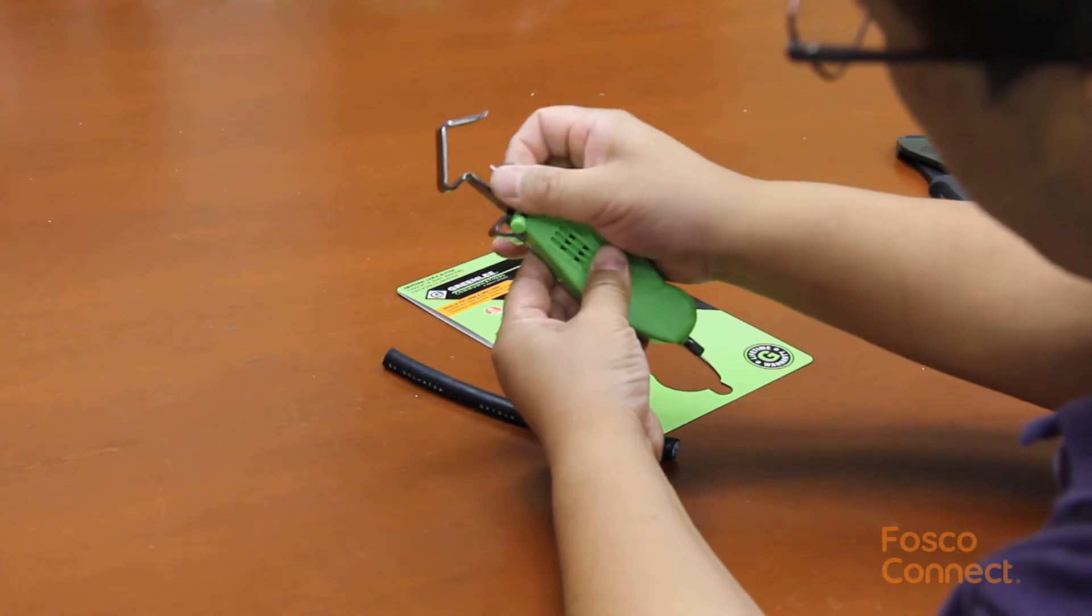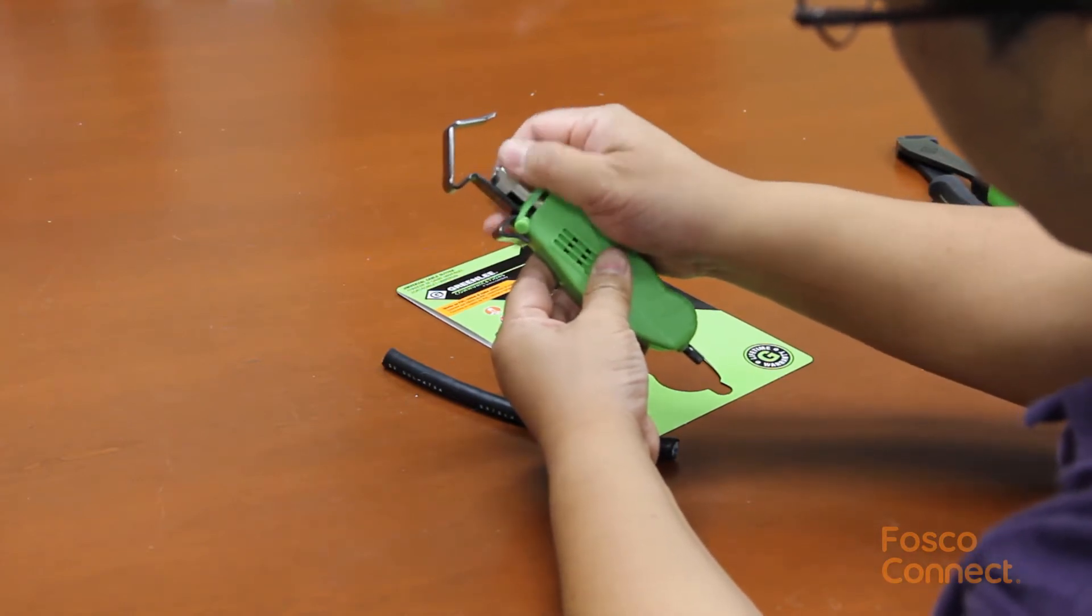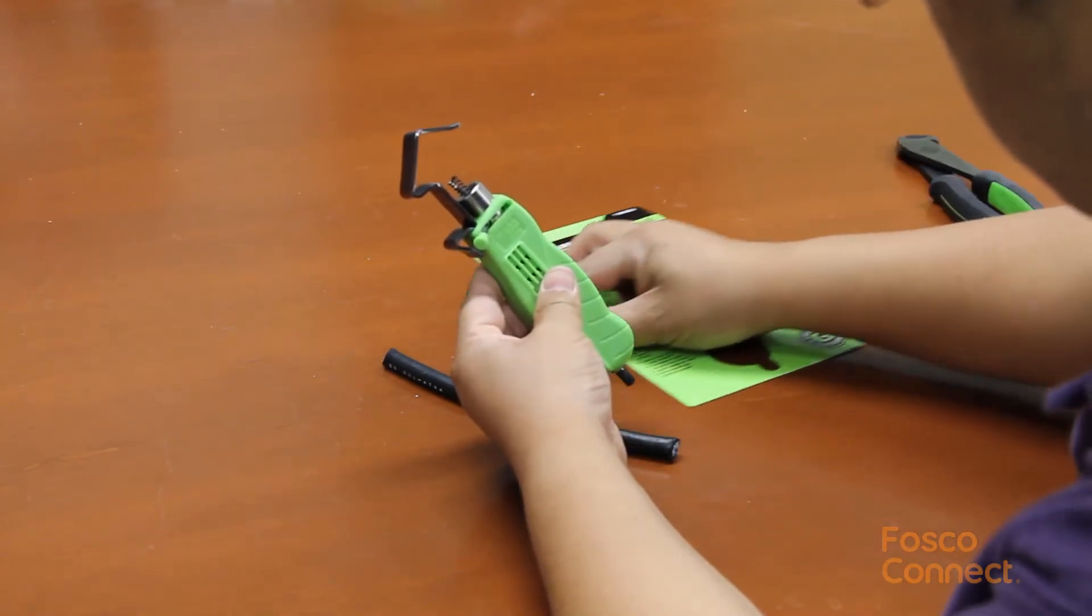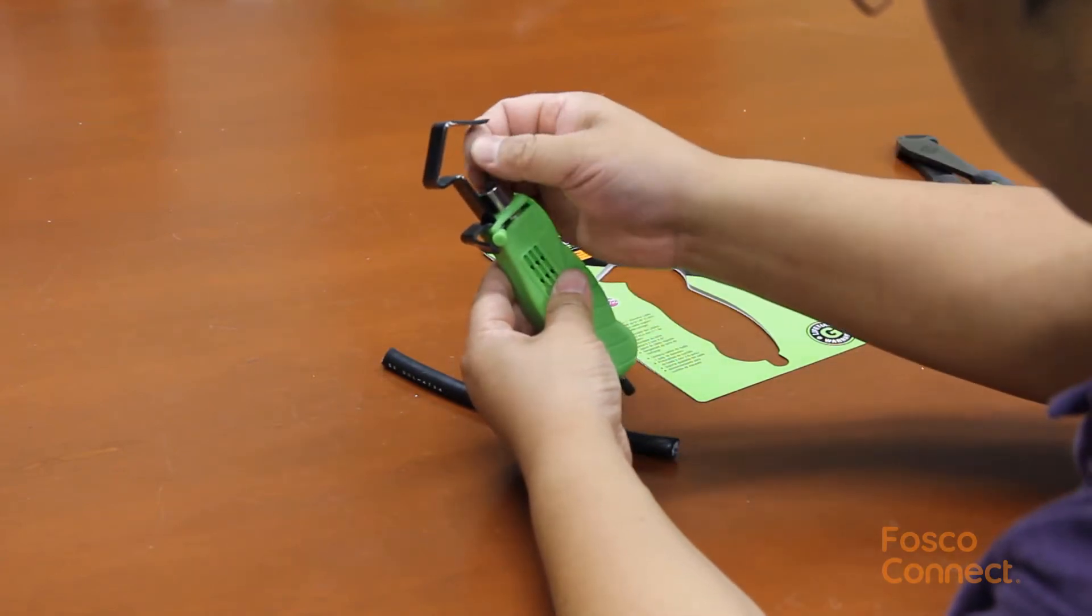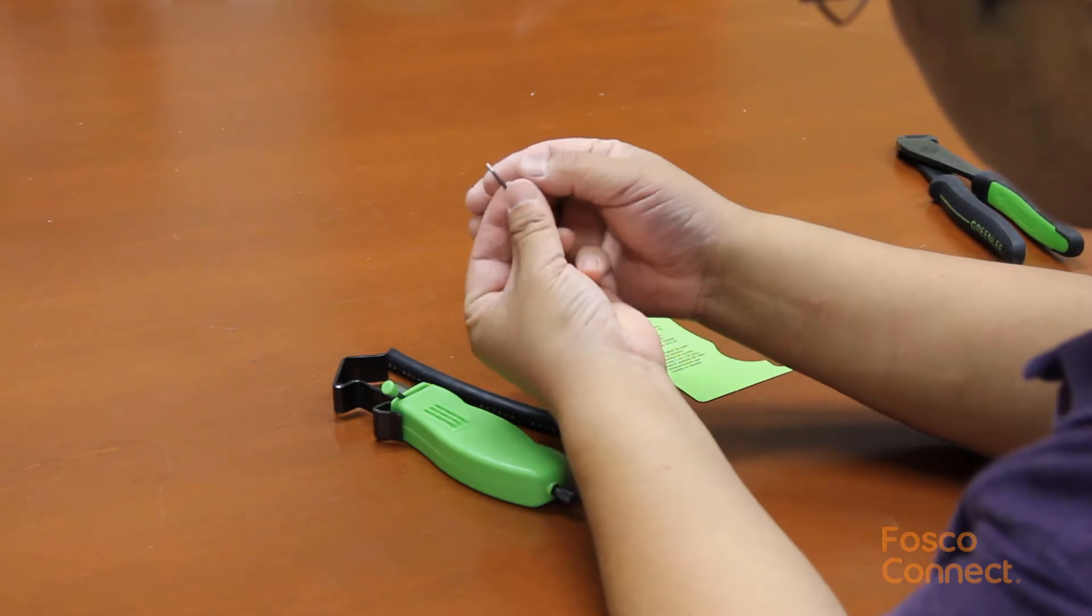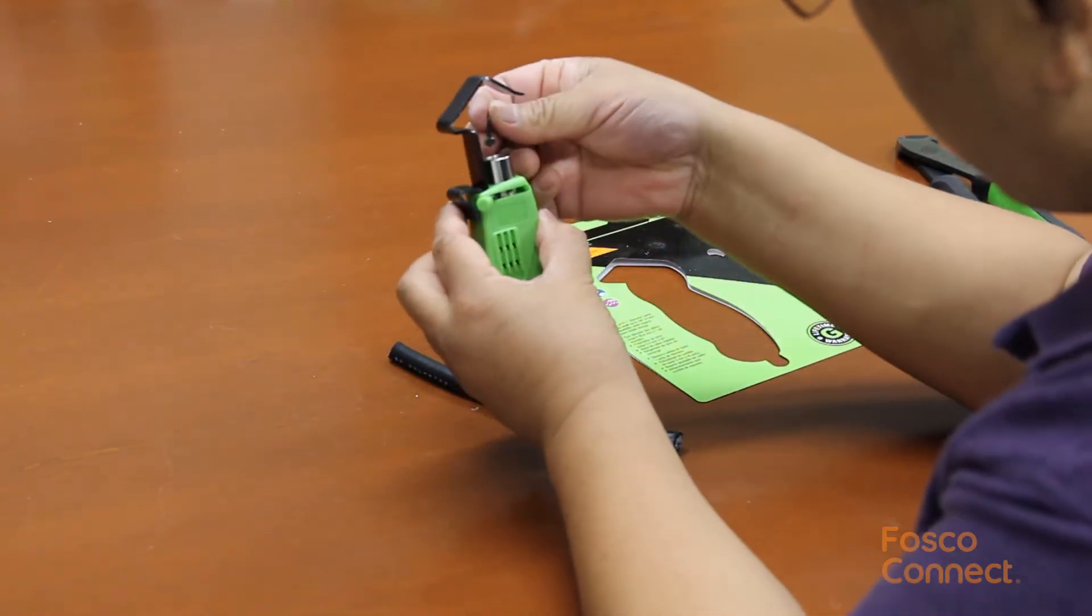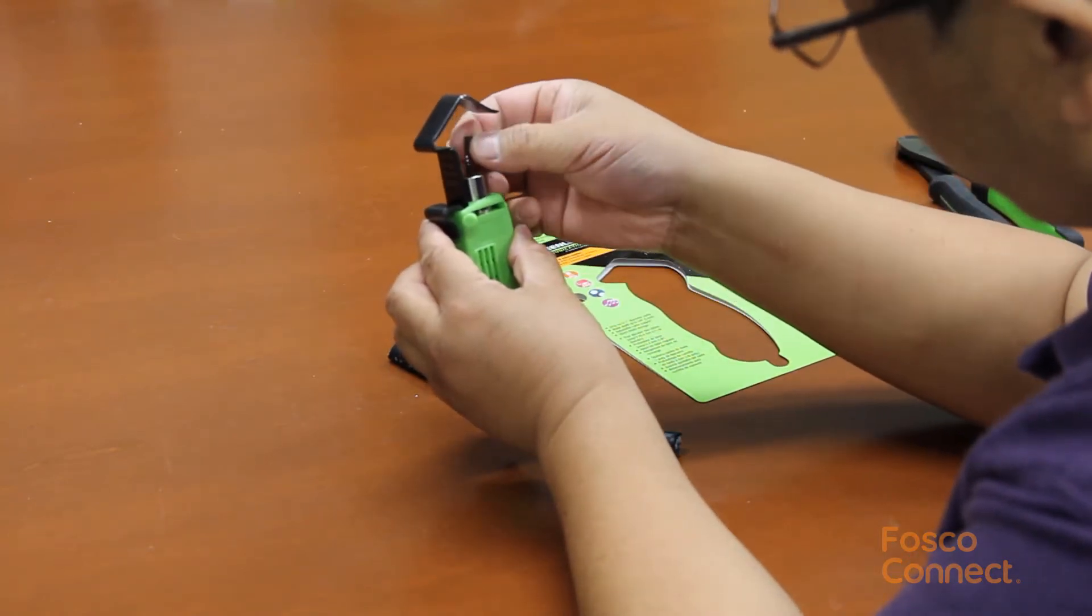This blade is replaceable. Just screw off the blade depth knob. This is the spring and here is the blade that can be replaced once it gets dull. There is a slot at the center. You insert the blade back into the slot. Put back the spring and then screw on the knob.